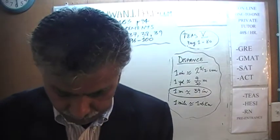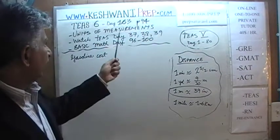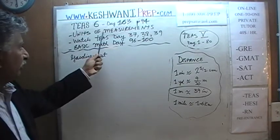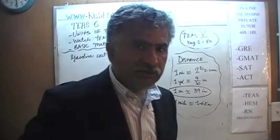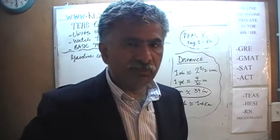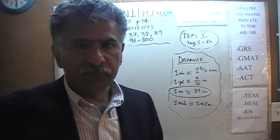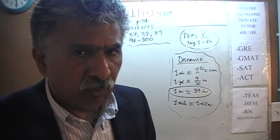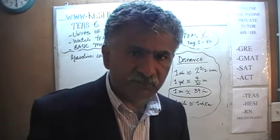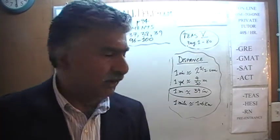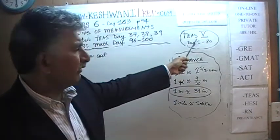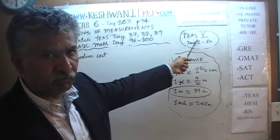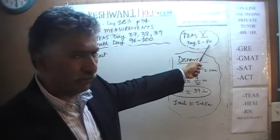Today is our lesson number 163. We are dealing with the notion of units of measurements — how to go about converting metric units to English units and vice versa. If you are interested in getting some more practice on the concept, you will find that we have solved every single math problem that appeared in the previous edition, the 5th edition, and you will find the solutions to all of those problems from day number 1 through 80.